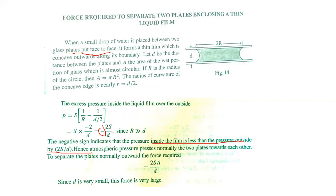The pressure inside the film is less than the pressure between the plates — a low pressure region. Outside is a high pressure region. So the atmospheric pressure presses normally on the two plates towards each other.